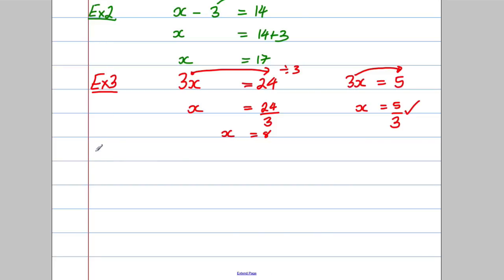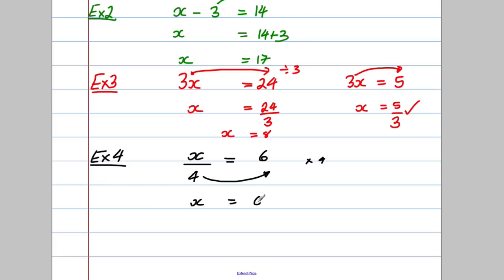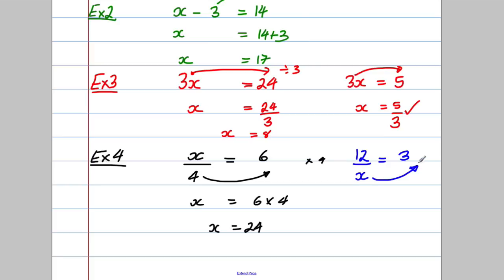Example 4 — suppose we had X divided by 4 was equal to 6. We multiply both sides by 4 to undo the divide by 4. X is equal to 6 multiplied by 4. X is equal to 24. Check: 24 divided by 4 is equal to 6. It could be slightly more complicated — suppose we said 12 divided by X was equal to 3. We multiply both sides by X. So 12 would be equal to 3X. Then we divide both sides by 3. X would be 12 over 3. X would equal 4. 12 divided by 4 is indeed 3.